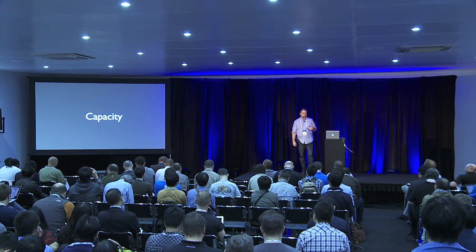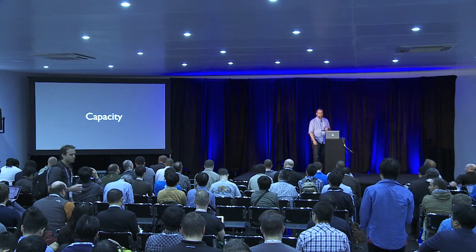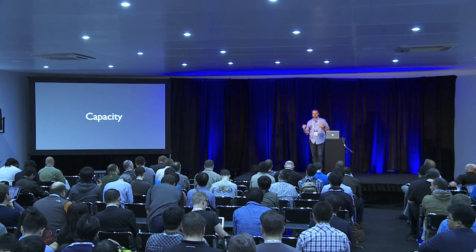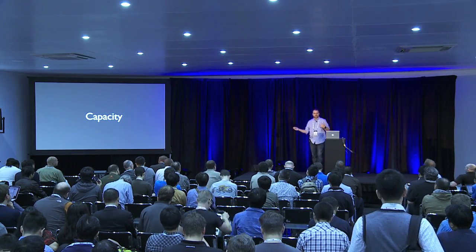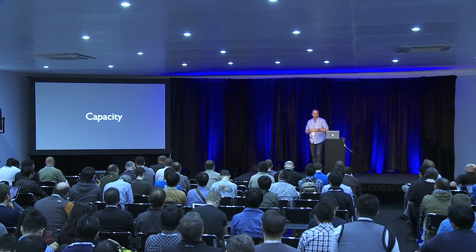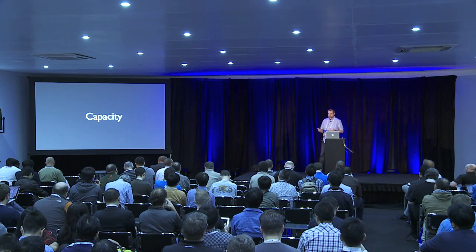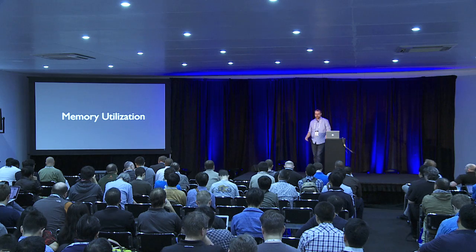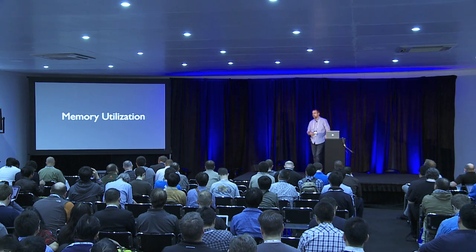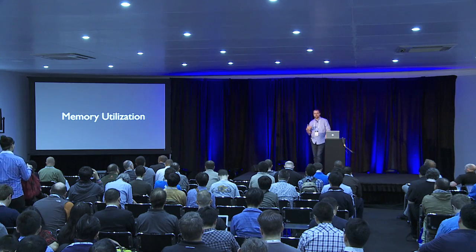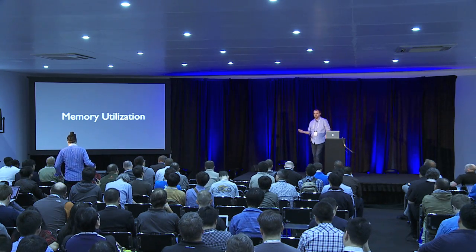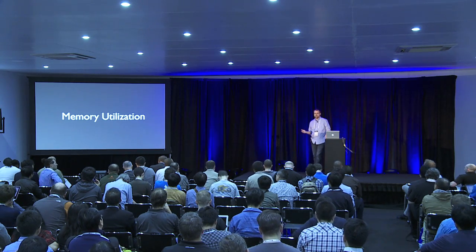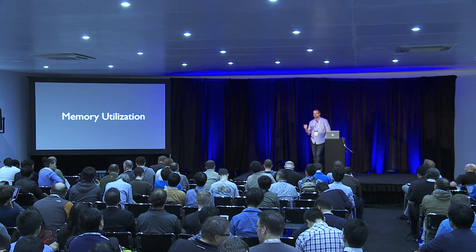The third thing we look at after uptime and performance is capacity. For those of you running clouds, whether public or private, your customers expect basically an infinite cloud, and you know there's a very real physical deployment underneath that you have to manage to make sure you're meeting their needs. At Rackspace we look at a couple of different things. The very first is purely memory utilization. The way we set up our flavors, memory is the constraint we care about most, so we monitor for a strict percentage of memory available to use.